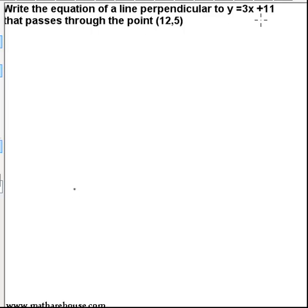Write the equation of a line perpendicular to y equals 3x plus 11 that passes through the point (12,5). Our goal is to have an equation in slope intercept form, y equals mx plus b. And just remember, m is the slope, b is the y intercept.